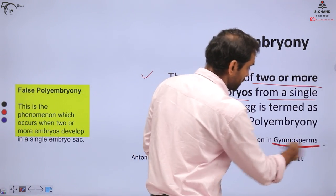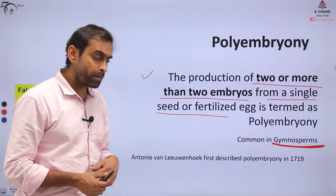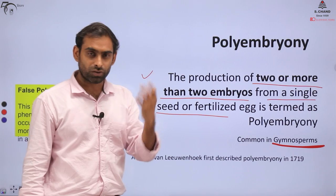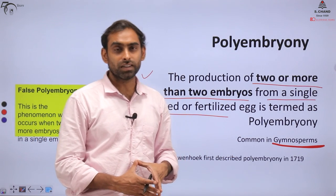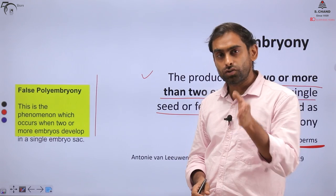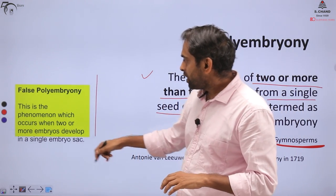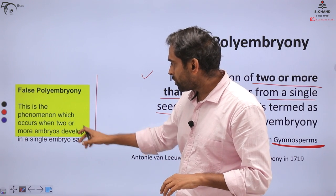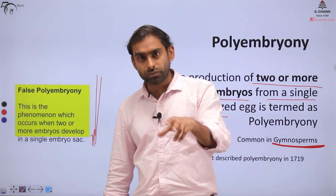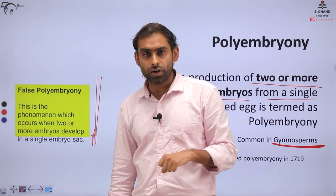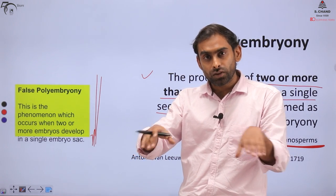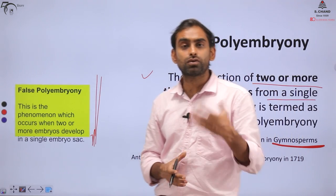Polyembryony is very common in gymnosperms. It was discovered earlier than Apomyxis — first described by Antoni van Leeuwenhoek, who invented the microscope, in 1719. Besides true polyembryony, there is also false polyembryony. True polyembryony occurs when two or more embryos develop within a single embryo sac. If there were originally two ovules present inside the ovule and embryos formed from both, that situation would be called false polyembryony.